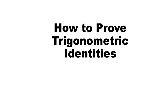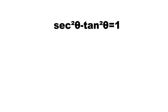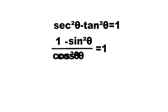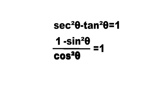How to prove trigonometric identities. For example, secant squared theta minus tangent squared theta is equal to 1. From reciprocal identities we have secant squared theta is equal to 1 over cosine squared theta, and from quotient identities we have tangent squared theta is equal to sine squared theta over cosine squared theta.